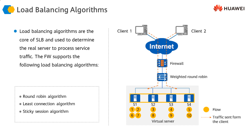With the round robin algorithm, when a request comes in, the firewall forwards it to the first server, the next request to the second server, then the third, and so on. Once the request has been forwarded to the last server, the next request goes back to the first server. Each client request is forwarded to each server in turn in a round robin fashion.